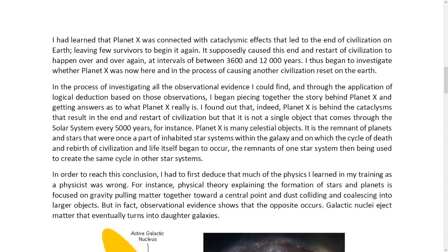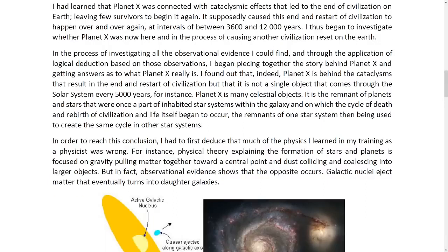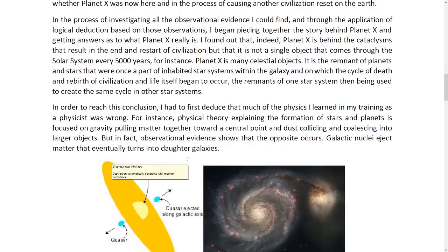I found out that, indeed, Planet X is behind the cataclysms that result in the end and restart of civilization, but that it is not a single object that comes through the solar system every 5000 years, for instance. Planet X is many celestial objects. It is the remnant of planets and stars that were once a part of inhabited star systems within the galaxy, and on which the cycle of death and rebirth of civilization and life itself began to occur. The remnants of one star system then being used to create the same cycle in other star systems.